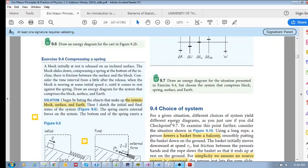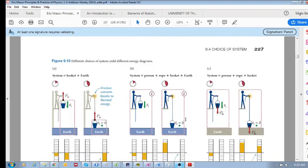9.4 is choice of system. I've been harping on about how important and how dependent the energy diagram is on the system that you choose. Let's look at this example.